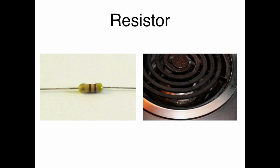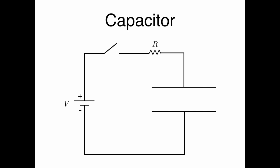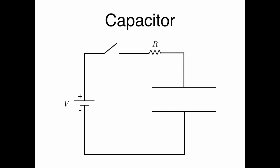We've gone through wires and resistors. Let's talk about another element — the capacitor. On the left is a battery, on the upper left is a switch, on the upper right is a resistor, and on the right in this red circle is the capacitor. A capacitor is two plates separated. When we flip the switch, an electron from the top plate is going to move with a chain reaction onto the bottom plate. What remains in the top plate is the absence of an electron, or a hole, which we denote by a plus sign. So now there's a charge across the two plates of this capacitor. This happens again and again until eventually the voltage across the capacitor is very close to the voltage of the battery.